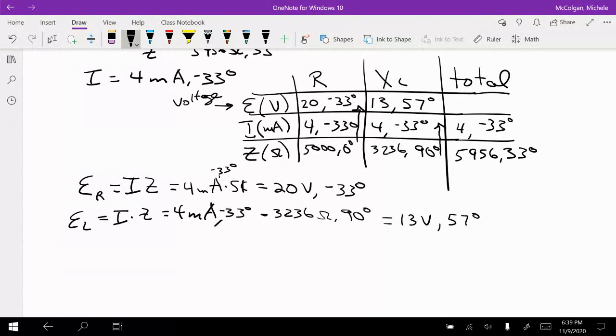And then my last one, so my E total, we know this is going to be 24 and 0 degrees. And we can just check that. We could just take and multiply these through here. So E total is equal to 4 milliamps at negative 33 degrees times 5,956 at 33 degrees. And so when I multiply that through, if I kept all of my decimal places, I would get 24. Because this looks like just 6,000 times 0.004, and that's about 24. And then when I add negative 33 and 33, I get 0 degrees. So that checks out.